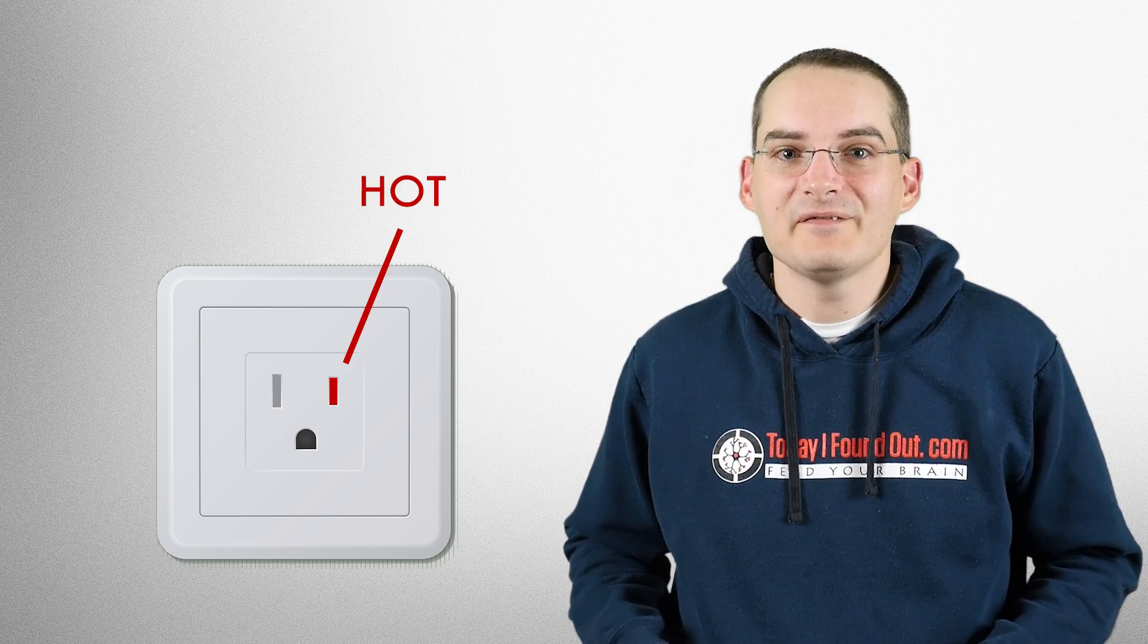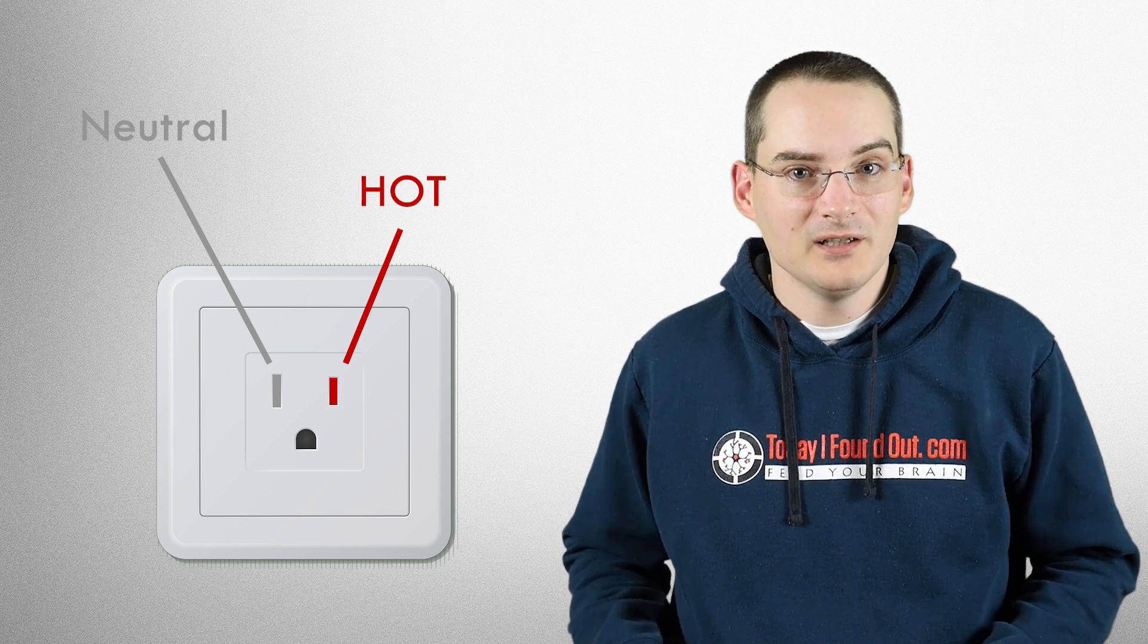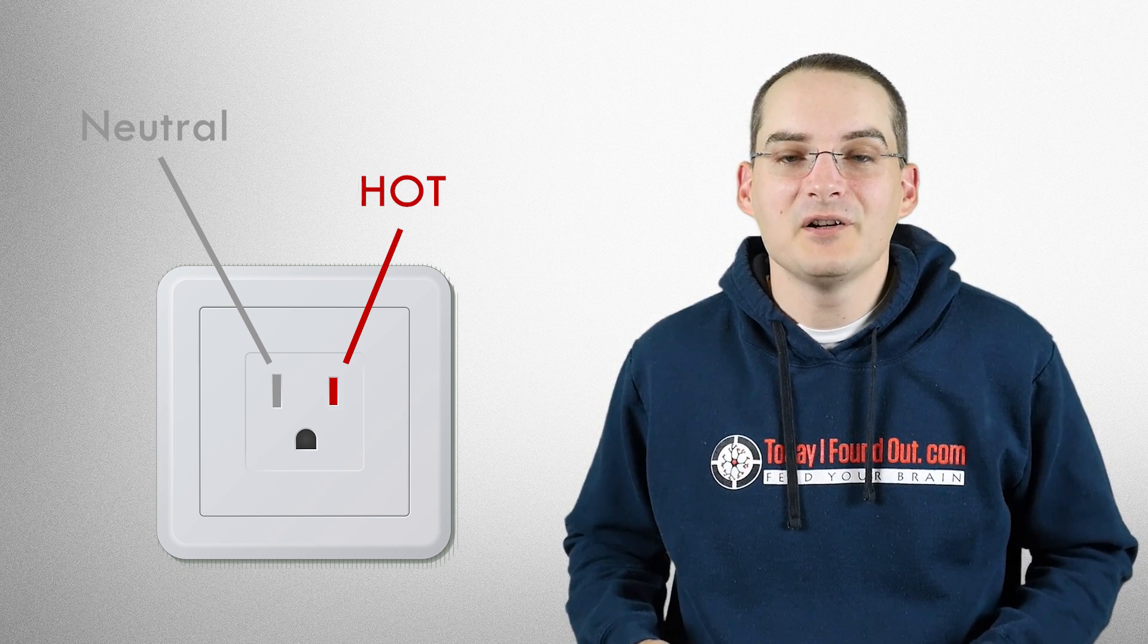In a typical American outlet, the circuit is comprised of a right vertical slot connected to the hot wire and a larger left vertical slot connected to the neutral wire. The plugged-in device itself, the load, completes the circuit with power flowing through it.